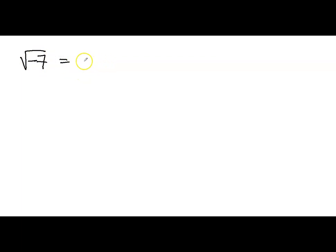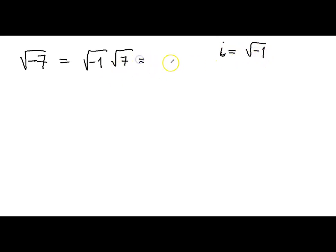Now let's try simplifying problems with a negative number inside a square root. For example, the square root of negative 7 equals the square root of negative 1 times the square root of 7. Since i equals the square root of negative 1, we can write this as i times the square root of 7.